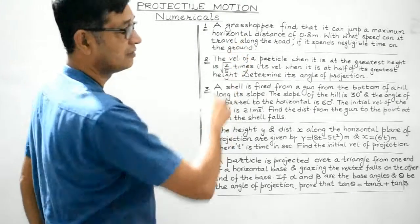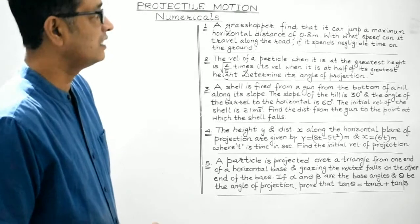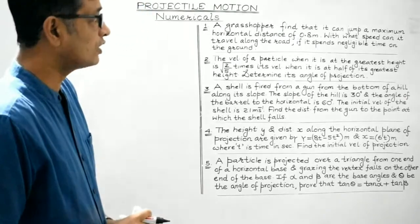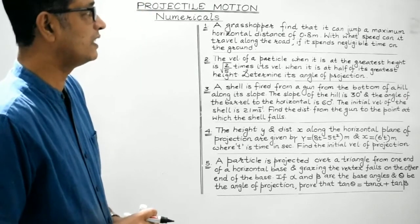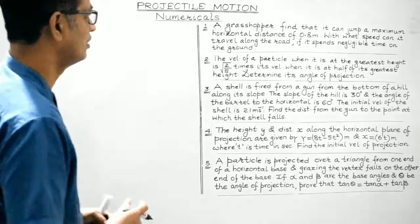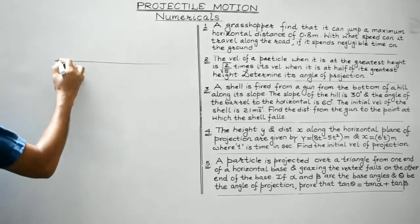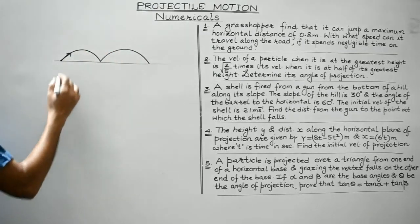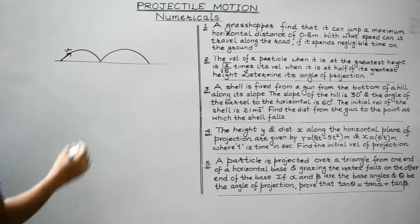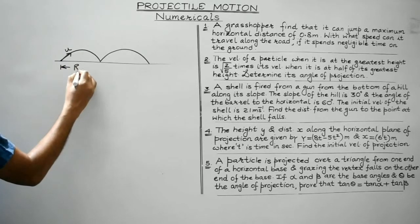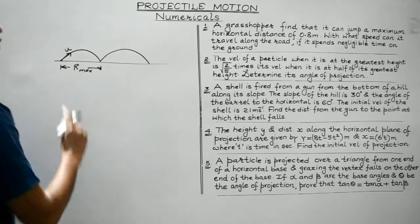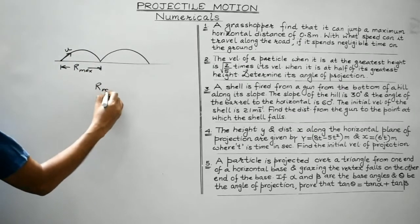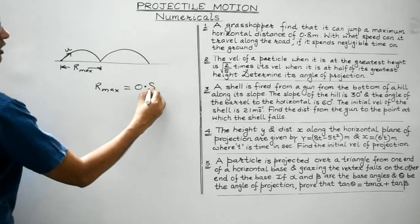A grasshopper finds that it can jump to a maximum horizontal distance of 0.8 meter. With what speed can it travel along the road if it spends negligible time on the ground? So suppose this is the ground — it will hop like this, spending negligible time. Suppose its velocity is u, the range is given to be maximum, and r_max is given to be 0.8 meter.